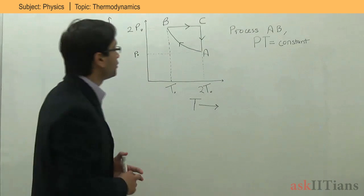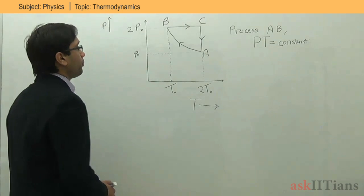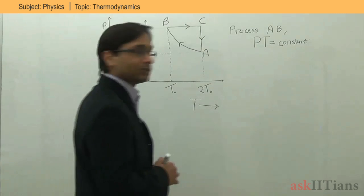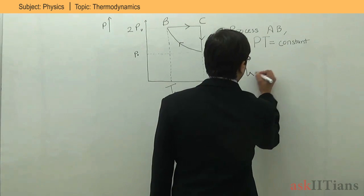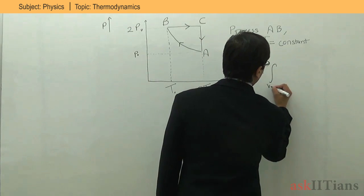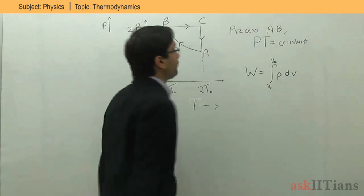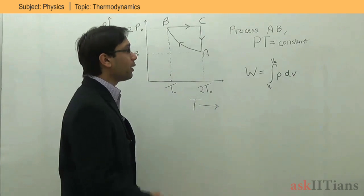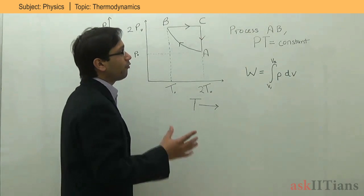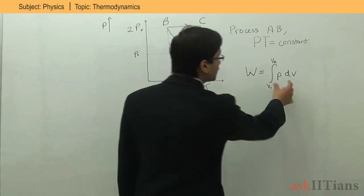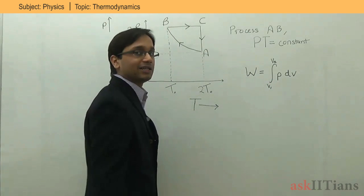In the first part of this question, we have to find the work done for process AB. To proceed, we know that the work done in a thermodynamic process of an ideal gas is W = ∫(V1 to V2) P dV. But in this question, both P and V are varying, so we need to substitute P dV in terms of one variable — in terms of temperature — so that we can integrate the expression.